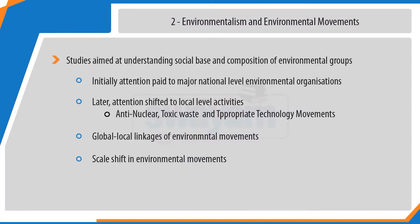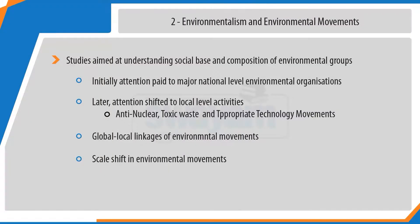The second area of research in contemporary environmental sociology is that of environmentalism and environmental movements. Studying social movements was something not new to sociologists. However, when environmental problems became global problems, sociologists dealing with social movements became interested in studying environmental movements. These studies aimed at understanding the social base and composition of environmental groups. Initially, attention was paid to large-scale social movements concerning nature, but from the 1990s attention also shifted to understanding small-scale local conflicts over nature.